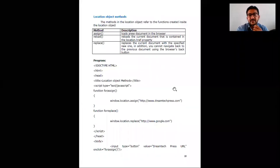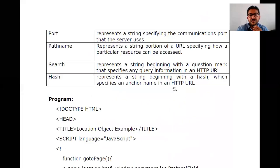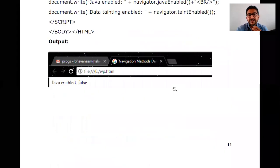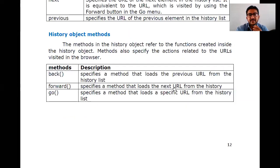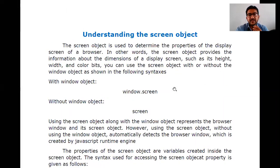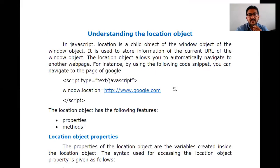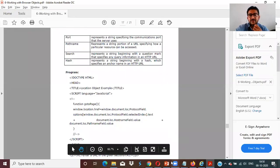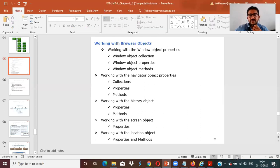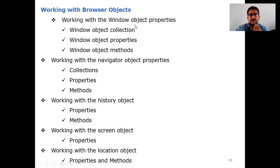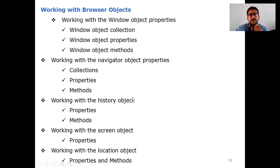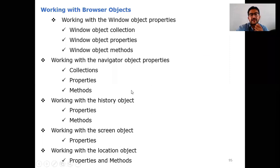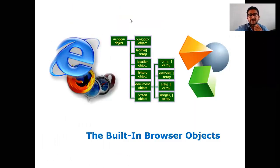In this topic, we have discussed the history object — covering its properties and methods — the screen object, covering only properties, and the location object, covering properties and methods, along with programs for each. In this class we have discussed the window object properties, navigation object properties, history object, screen object, and location object — all of which are JavaScript's built-in browser objects.